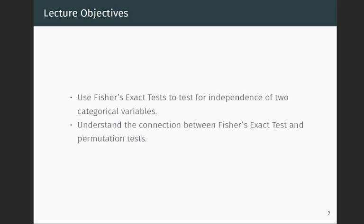The objectives for this lecture are learning how to use Fisher's Exact Test to test for independence of two categorical variables, and also understand the connection between Fisher's Exact Test and what we discussed in the previous lecture, namely permutation tests.